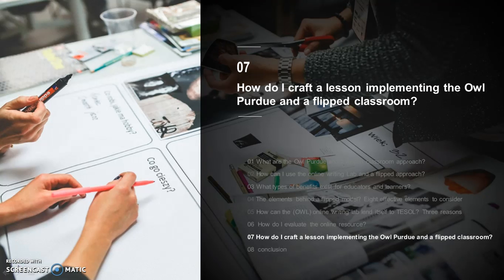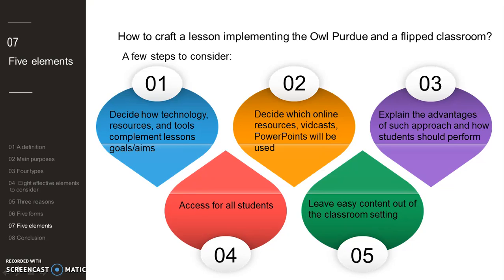Question number seven: how do I craft a lesson implementing OWL Purdue and a flipped model? First, decide how the technology resources and tools you'll be using will complement lesson aims and objectives — the purpose of digital language learning is to enhance learning and teaching via the opportunities that technology can afford. Second, decide which online resources students will use to practice with. Third, explain the pros of such an approach, and make sure to establish rules and accountability before distributing or assigning any work.